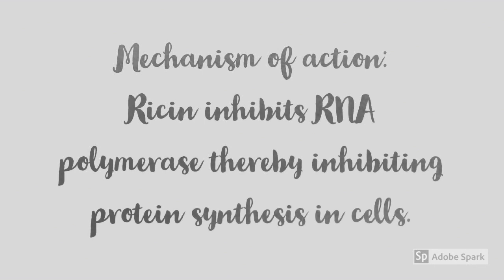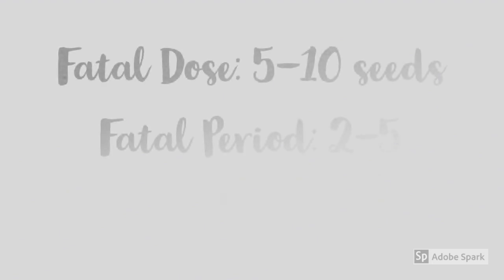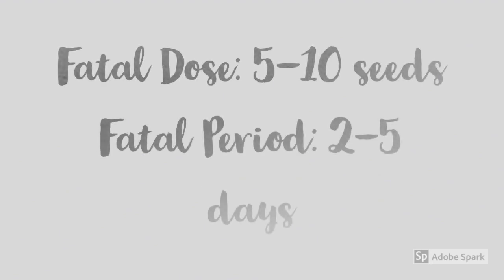So how does ricin work? Ricin inhibits RNA polymerase, thereby inhibiting protein synthesis in cells. Additionally, ricin has a special kind of protein that allows it to gain access to the endoplasmic reticulum of the gastrointestinal tract, and by binding to it, causes severe diarrhea.